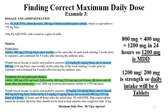Let us have a look at example 3. This is from Plaquenil tablets. Plaquenil tablets contain 200 mg of hydroxychloroquine sulfate, which is equivalent to 155 mg base. In the doses and administration section of Plaquenil tablets, a lot of information is given. From that, I have collected the important information from where we can get the maximum daily dose. In the green highlighted area, they have mentioned that treatment of uncomplicated malaria in adults: 800 mg, that is 620 mg base, followed by 400 mg at 6 hours, then doses at 24 hours and 48 hours after the initial dose — total 2000 mg hydroxychloroquine sulfate or 1550 mg base.